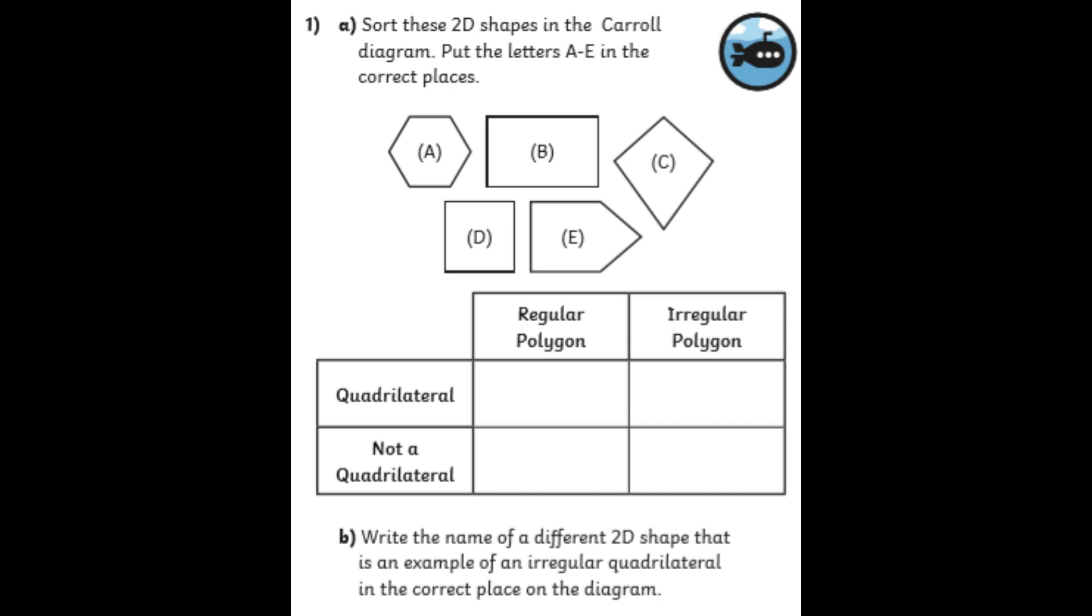Chilli one. Continuing to sort, really. So, we've got 2D shapes in the Carroll diagram. That is A to E. Can you put them in the correct location? So, across the top, it says regular polygon and irregular polygon. Down the left, quadrilateral and not a quadrilateral. So, if you remember, a quadrilateral is a shape with four sides. So, not a quadrilateral is a shape that doesn't have four sides.